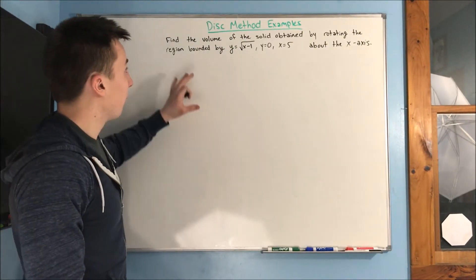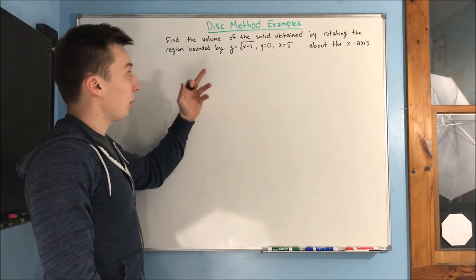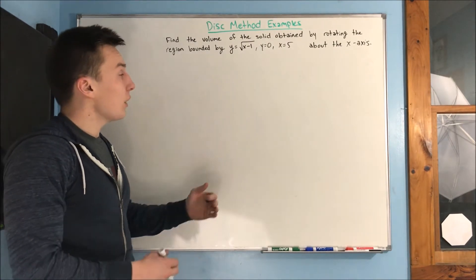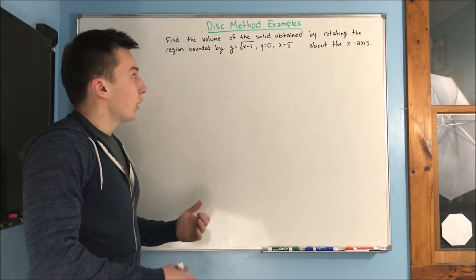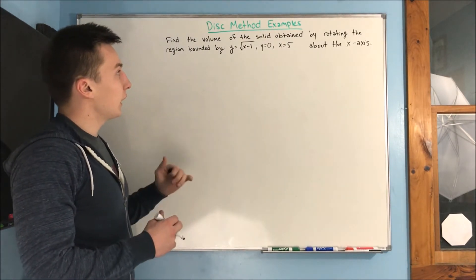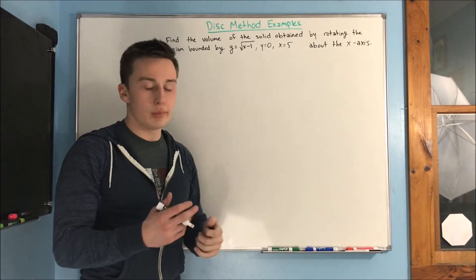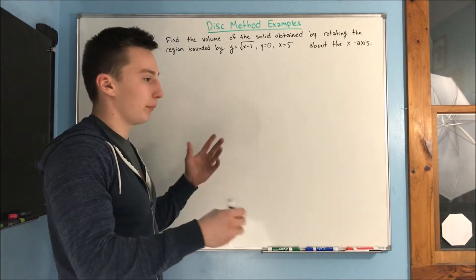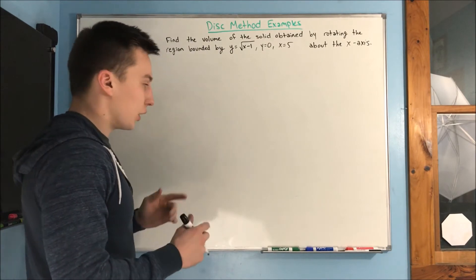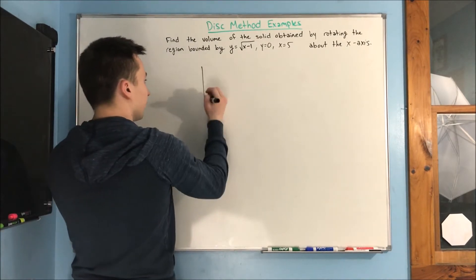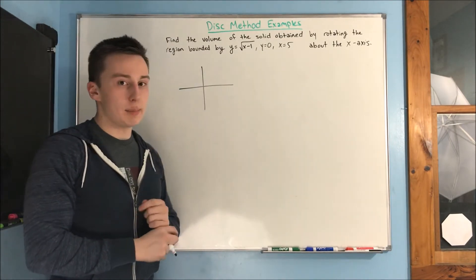Here is our next problem: find the volume of the solid obtained by rotating the region bounded by y equals rad x minus 1, y equals 0, and x equals 5 about the x-axis. This is the same style problem, and the first thing we need to do is draw a picture.